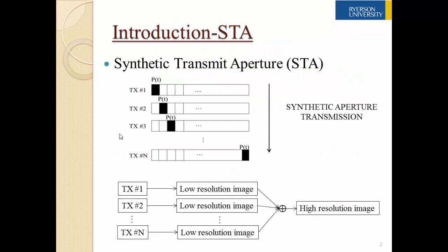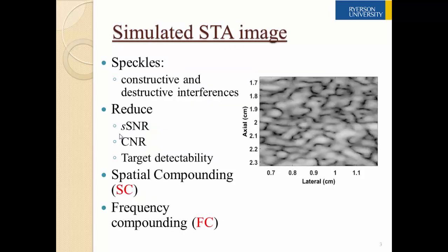As shown in this image, this is the transmission pattern of the STA imaging. Inside this transducer array, one of the elements is activated and this activated element is excited consecutively. After each transmission, all the elements inside the array are used as receivers to form one low resolution image. Afterwards, all these low resolution images are combined together to form a high resolution image. In the reconstructed image, it's already provided with speckles, which reduces image quality in terms of speckle signal-to-noise ratio, contrast noise ratio, and target detectability, especially for low contrast targets.